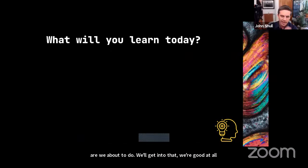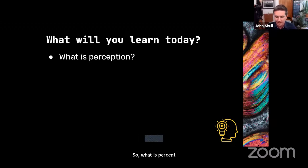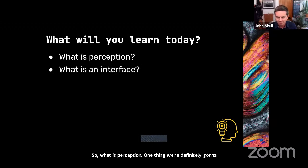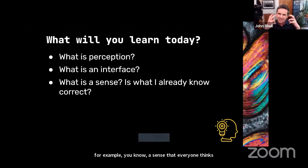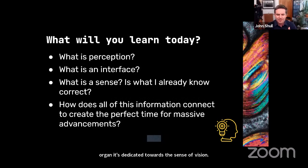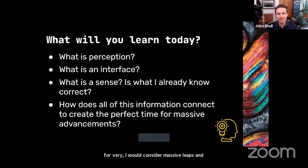So before we dive in, what are the high-level things we're going to learn today? What is perception? What is an interface? What is a sense — or is what I already know correct? For example, a sense everyone thinks about is vision — my eyes, a sensory organ dedicated towards the sense of vision. How does all this information come together to connect to these massive leaps and advancements in technology, interfaces, virtual spaces, smells, and everything else we've started to talk about?